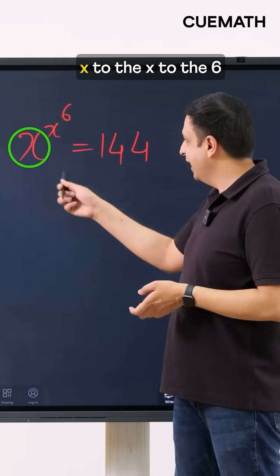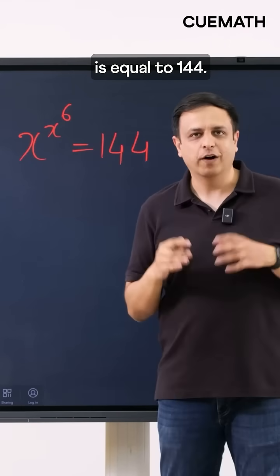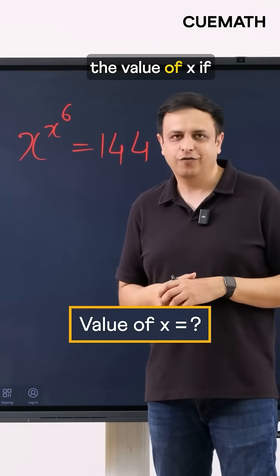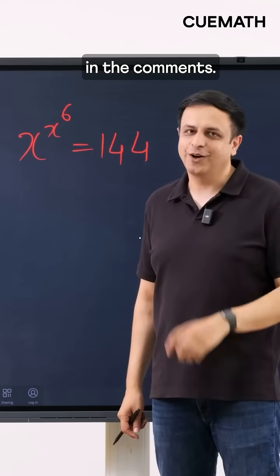Now here's a challenge for you. x to the x to the 6 is equal to 144. You have to find the value of x. If you're able to solve this problem let me know your answer in the comments.